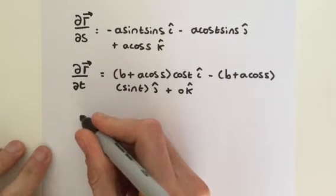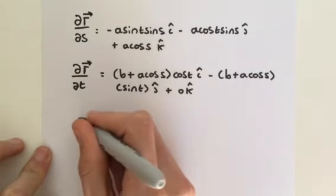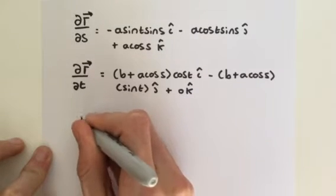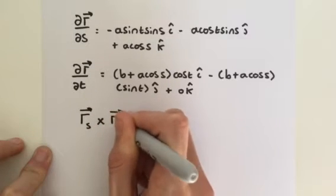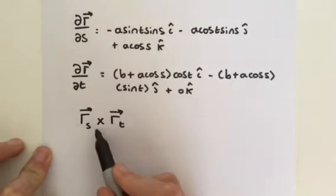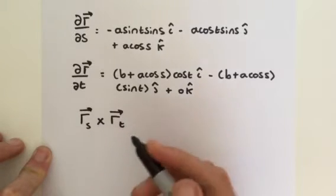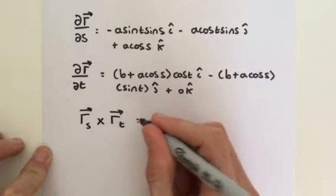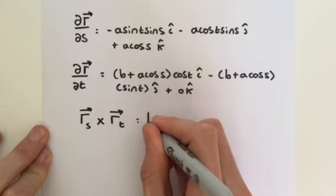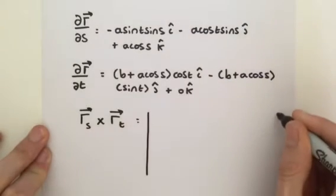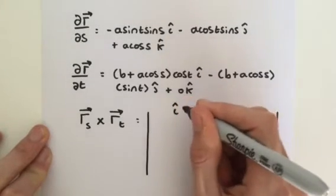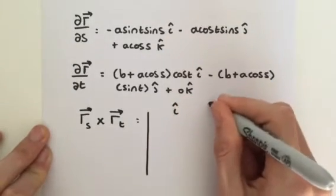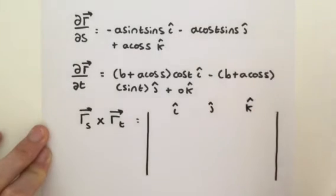So, let's draw our trustworthy table for our cross product. Partial derivative of s crossed with partial derivative of t, and this is going to equal a big table. So, we have our i component, we have our j components, and we have our k components. You should be pretty familiar with this method already.